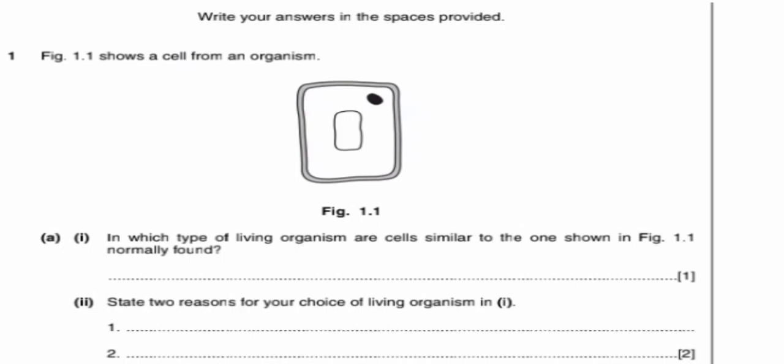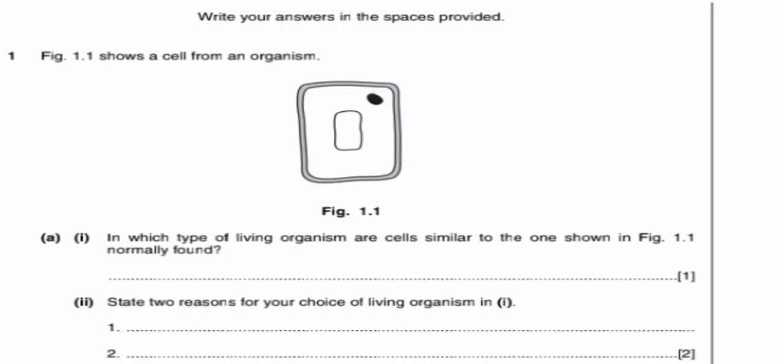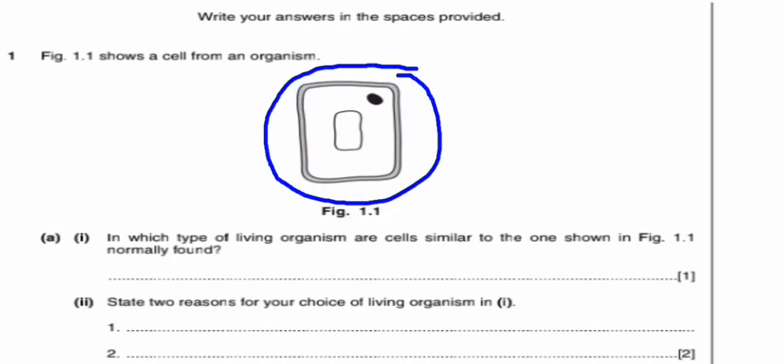The first question says figure 1.1 shows a cell from an organism. We have a cell which is shown here. The first question, Roman numeral one, is asking: in which type of living organism are cells similar to the one shown in figure 1.1? If you look clearly at figure 1.1, you are going to see that it has structures similar to that of a plant cell.